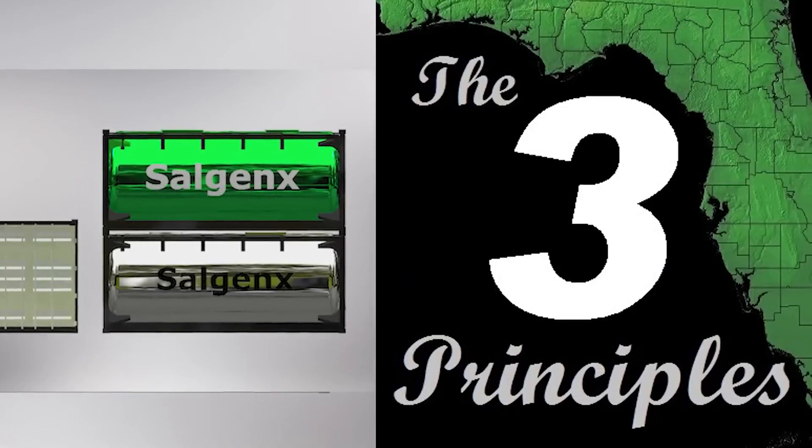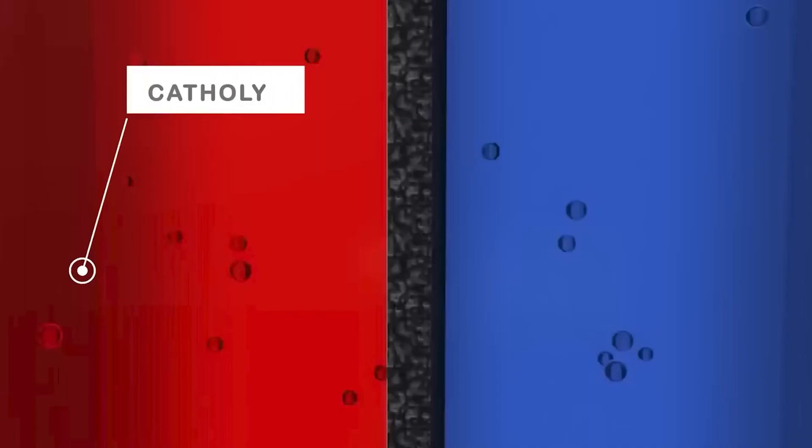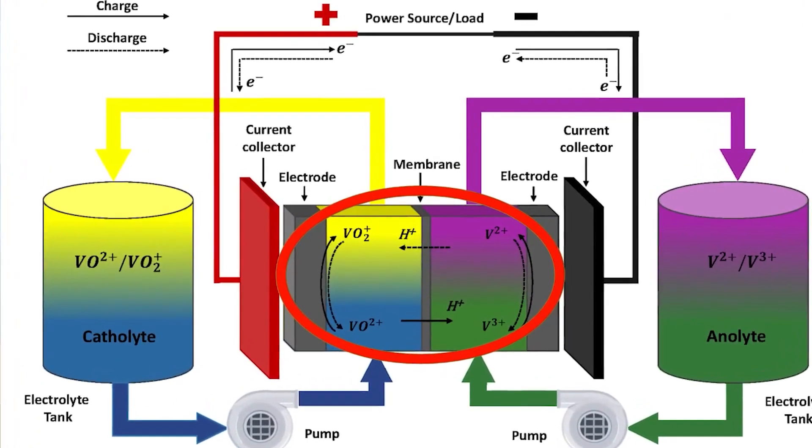Saltwater batteries operate on three fundamental principles. They consist of two tanks—an analyte and a catholite—that surround a central chamber. Liquid electrolytes flow from these tanks into the respective sides of the chamber through a process known as reduction.